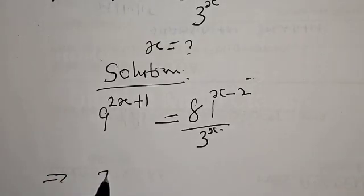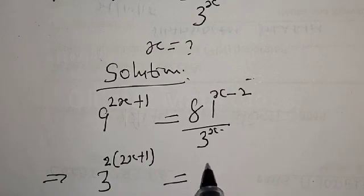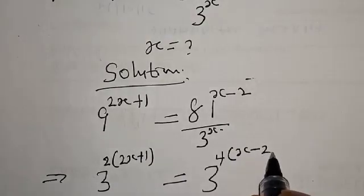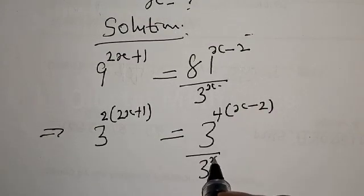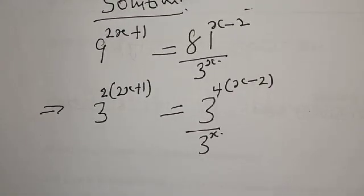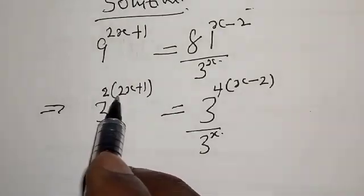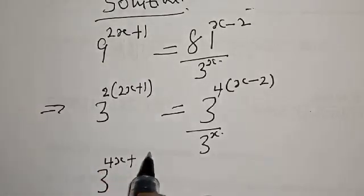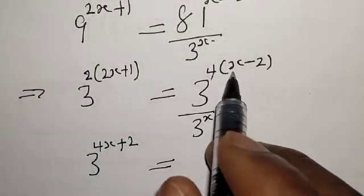9 raised to power 2X plus 1 can be rewritten as 3 squared raised to power 2X plus 1, which equals 3 raised to power 2 times (2X plus 1). This is equal to 81, which is 3 raised to power 4, times X minus 2, over 3 raised to power X. Opening the bracket of the exponent, we have 3 raised to power 2 times 2X plus 2 times 1, that is plus 2.